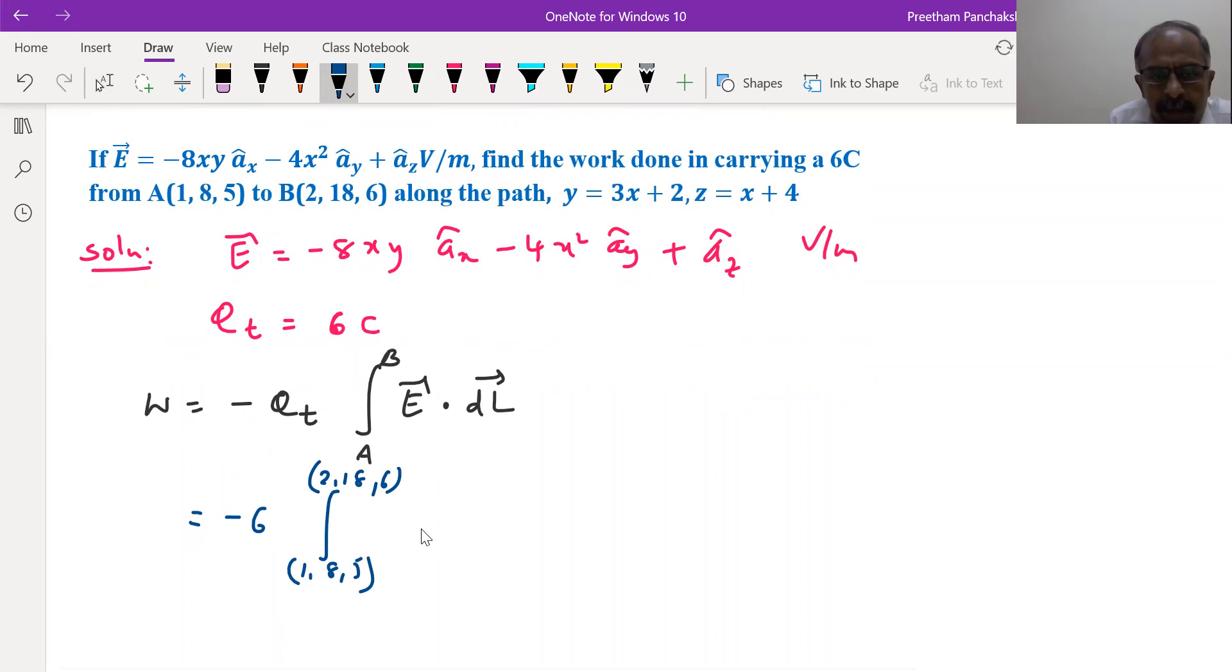Electric field, let us substitute: minus eight xy a x cap minus four x square a y cap plus a cap z. The dot product is the field dotted with dL differential length, that is given by dx a x, dy a y plus dz a z.